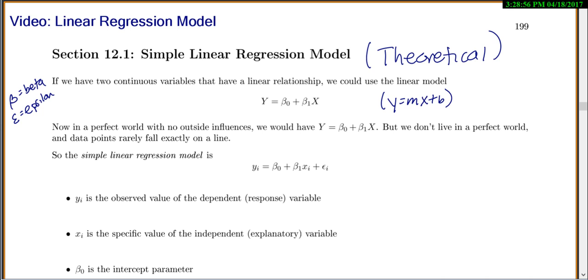Now, in a perfect world with no outside influences, you'd have the exact line y equals your intercept plus your slope times x. But we don't live in a perfect world, and data points rarely fall exactly on a line. So our simple linear regression model is, we'll do yi equals beta 0 plus beta 1 xi plus epsilon i.